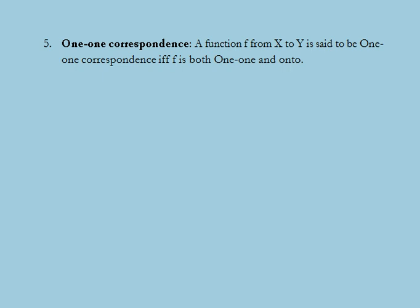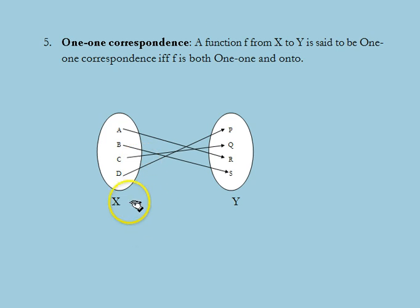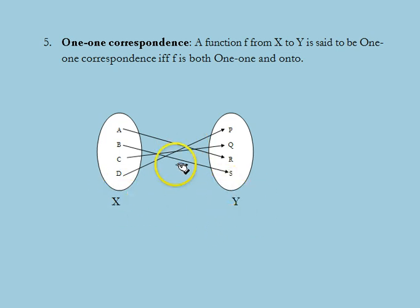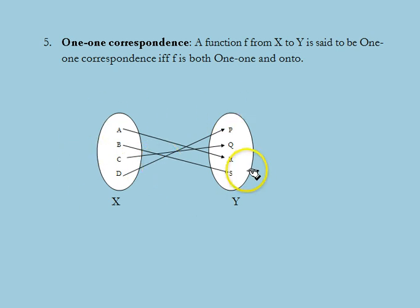Another type of function is one-to-one correspondence. A function f from x to y is called a one-to-one correspondence or bijection if and only if f is both one-to-one and onto. That means different elements of x have different images in y, and each element of y is the image of at least one element of x. In this example, x and y have elements a, b, c, d and p, q, r, s respectively. The function is one-to-one since each element of x has a unique image in y, and onto since each element of y is the image of at least one element of x. Thus this function represents a one-to-one correspondence.